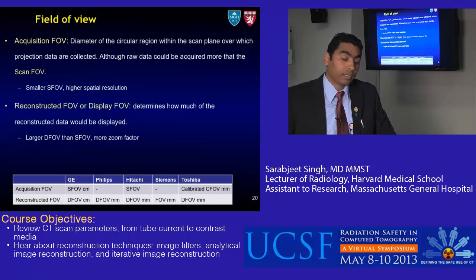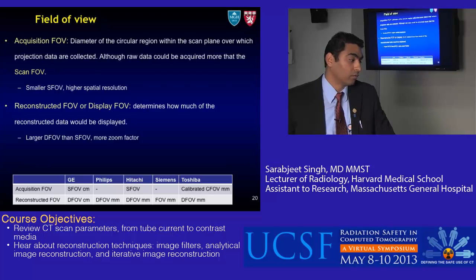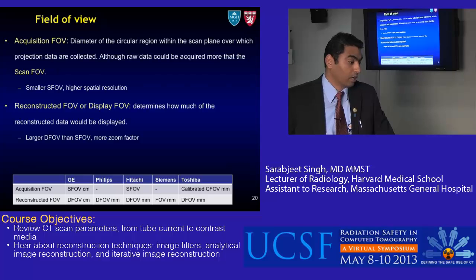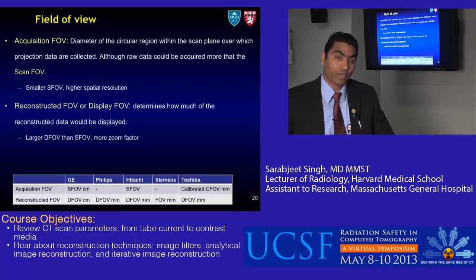The next parameter is field of view. Acquisition field of view is the diameter of the circular region within the scan plane over which projection data are collected — the raw data can be acquired beyond the scan field of view. A smaller scan field of view gives higher spatial resolution. The reconstructed field of view, or display field of view, determines how the reconstructed data is displayed. If the display FOV is larger than the scan field of view, the zoom factor is greater than one, and the images become blurred as zoom increases.